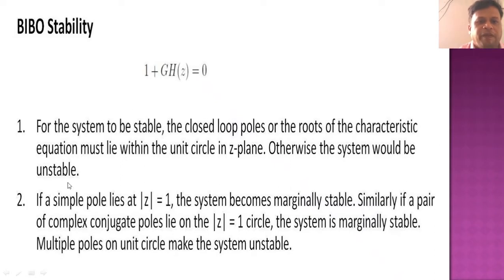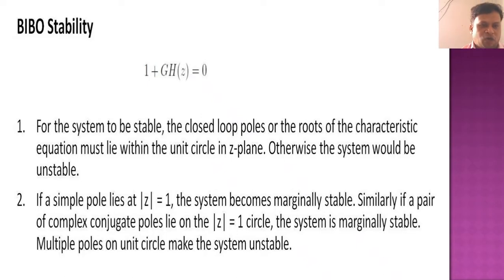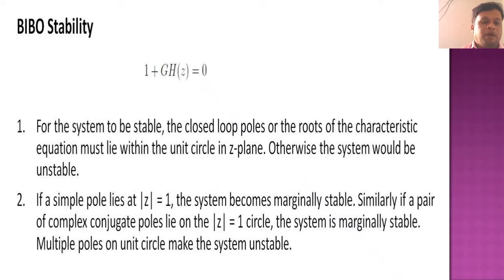In the z-plane, the poles must lie within the unit circle for the system to be stable; otherwise the system is unstable. If a simple pole lies at modulus equal to 1, the system becomes marginally stable. Similarly, if a pair of complex conjugate poles lie on the circle z equal to 1, the system is marginally stable. Multiple poles on the unit circle make the system unstable — repeated poles on the unit circle may make the system very unstable.